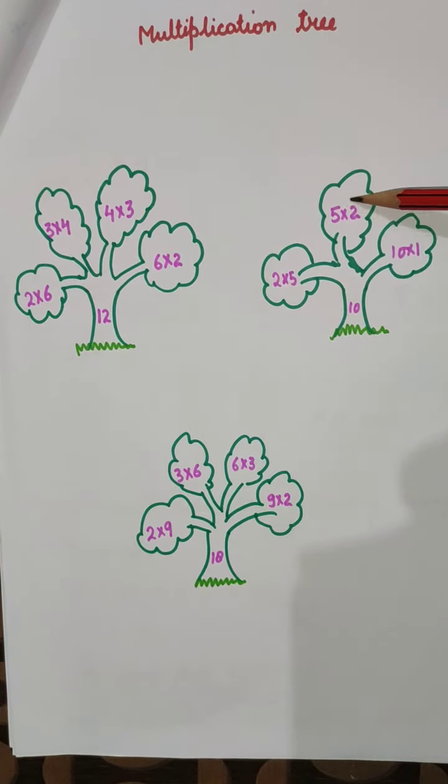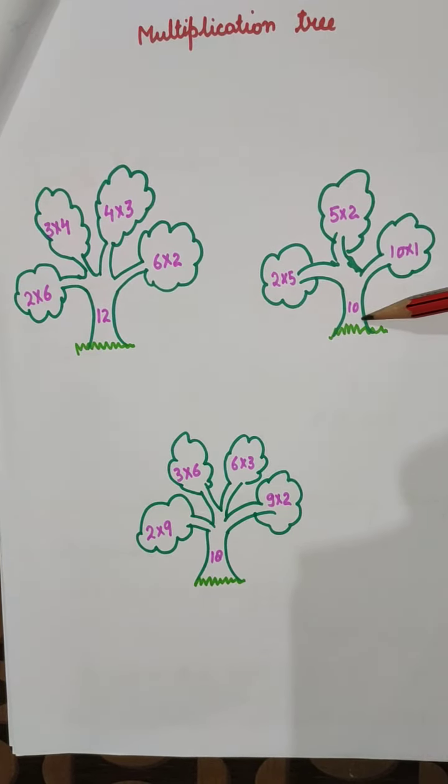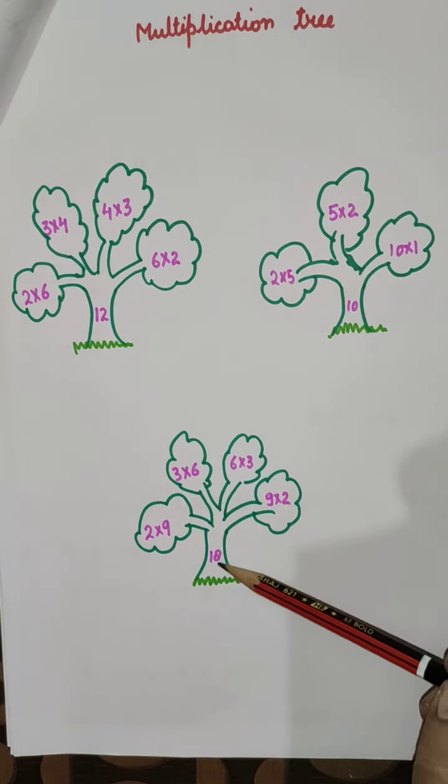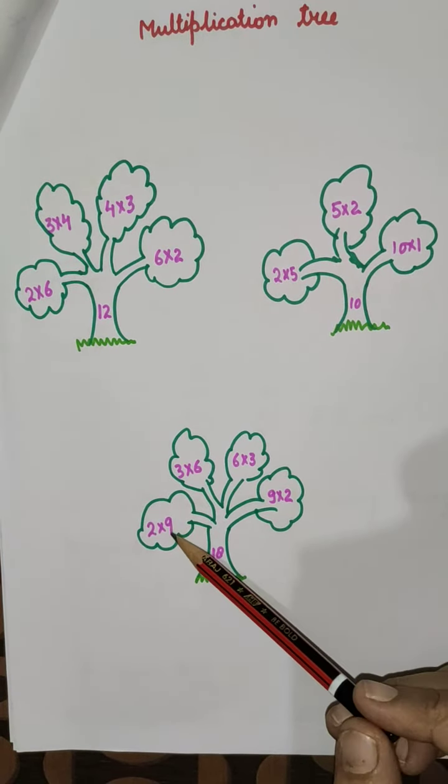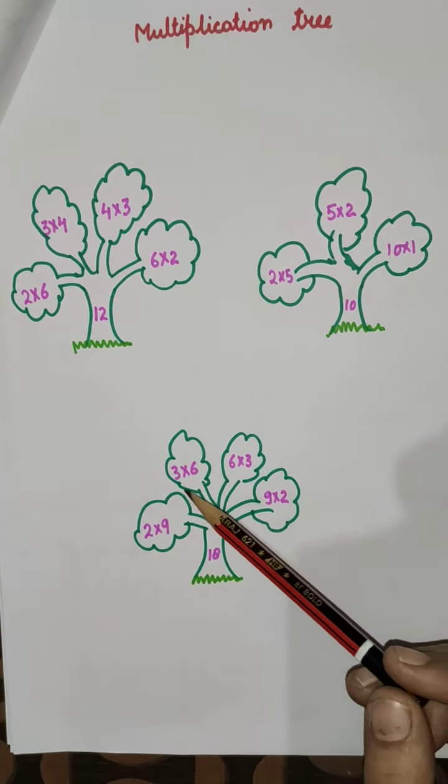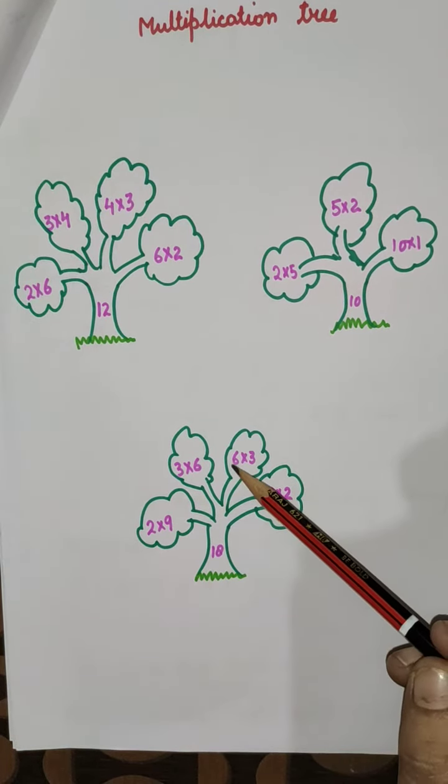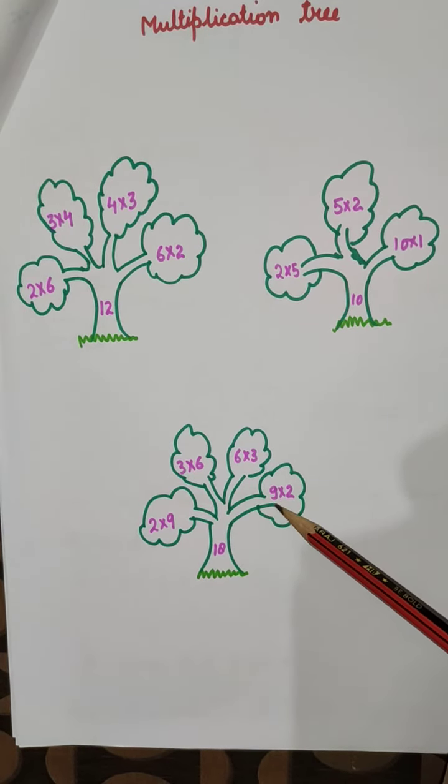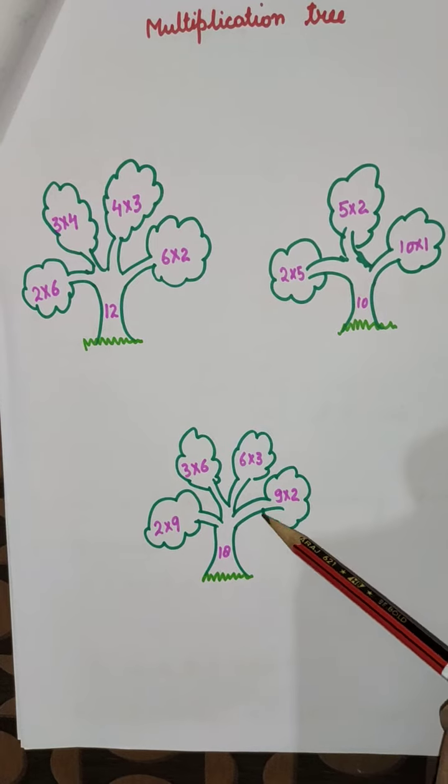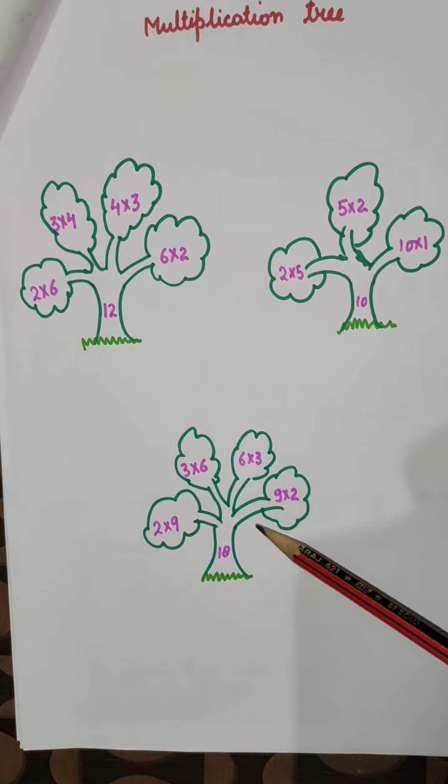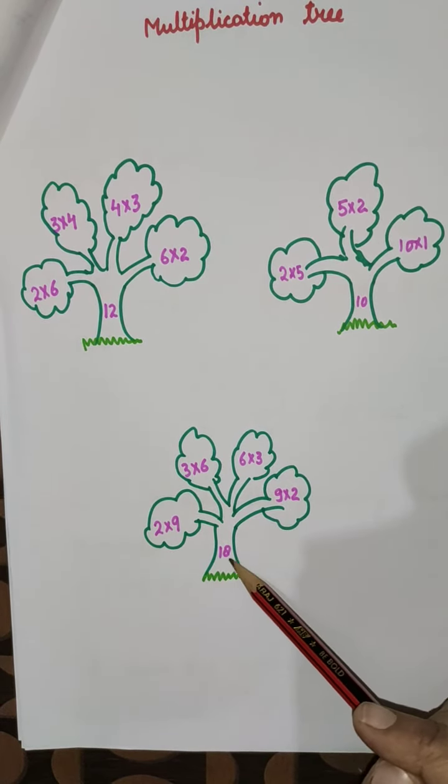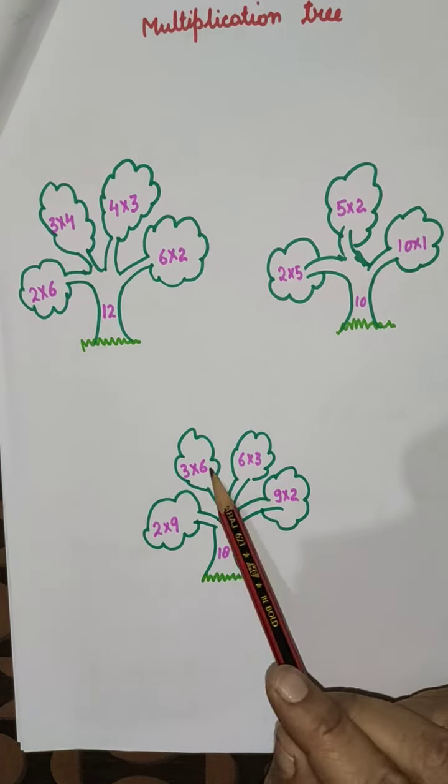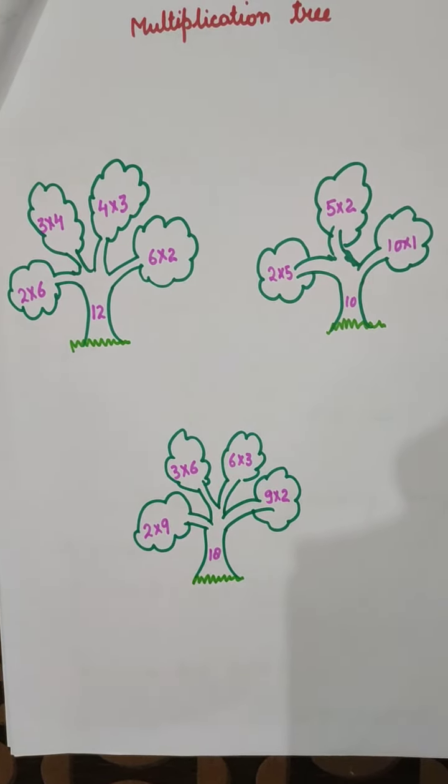Now here 18. 18 comes in the table of 2: 2×9 = 18, then 3×6 = 18, then 6×3 = 18, and then 9×2 = 18. So whatever tables the digit is in, you have to write it in the form of a tree. Thank you.